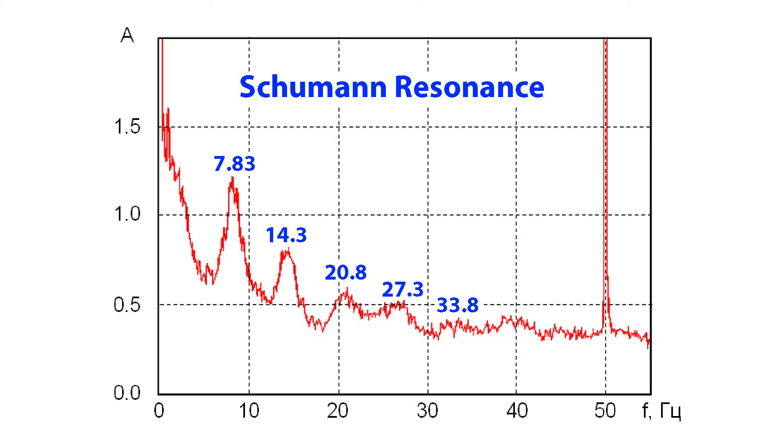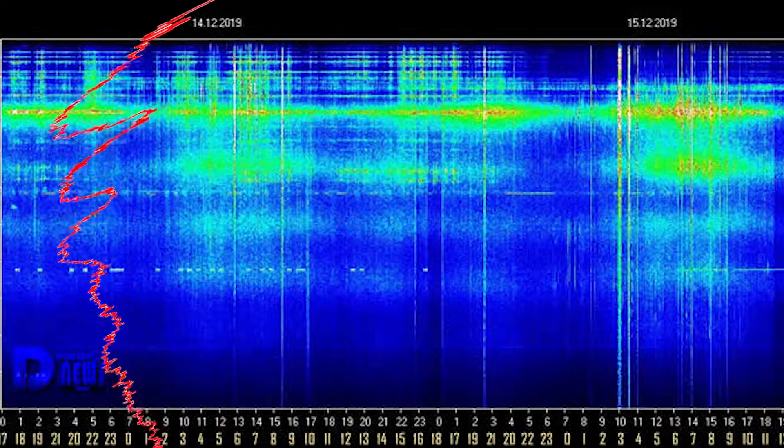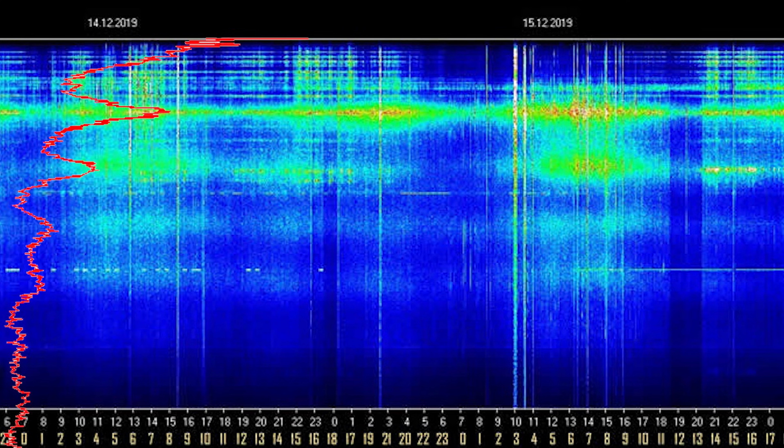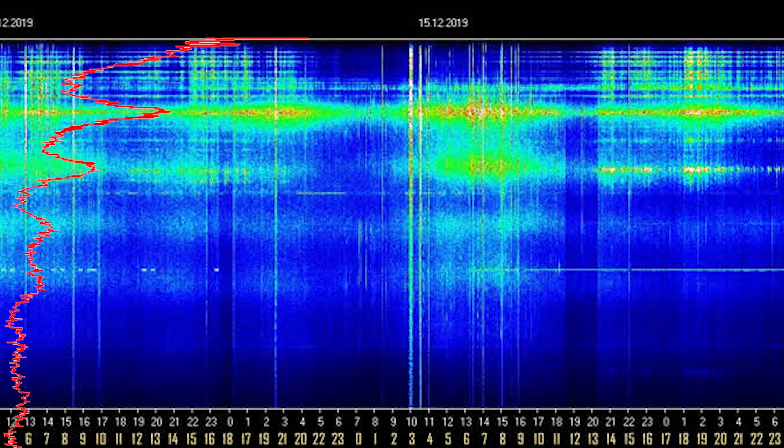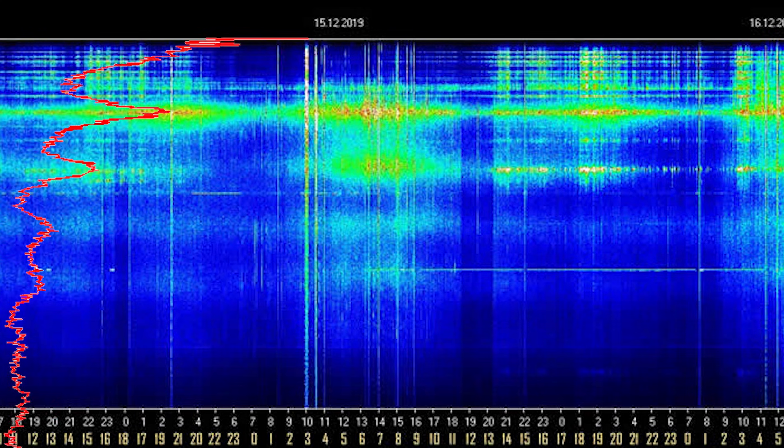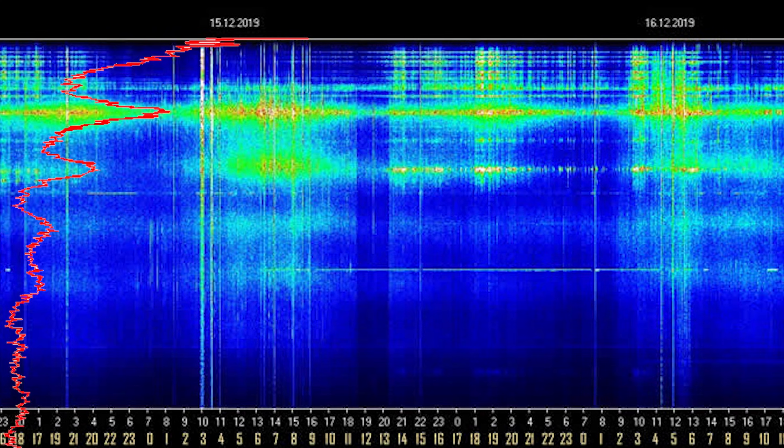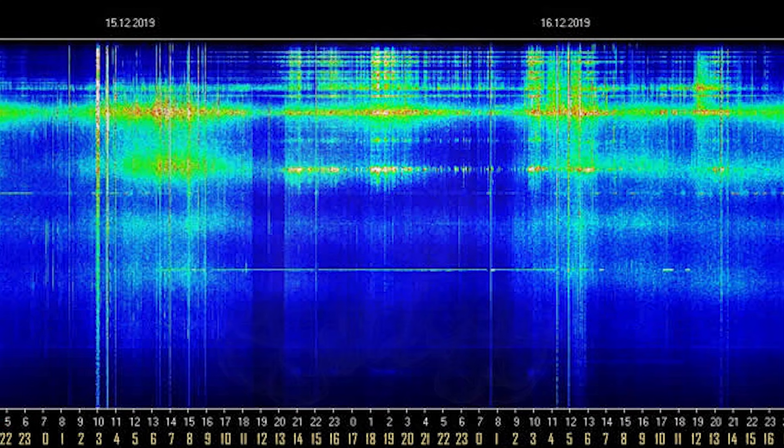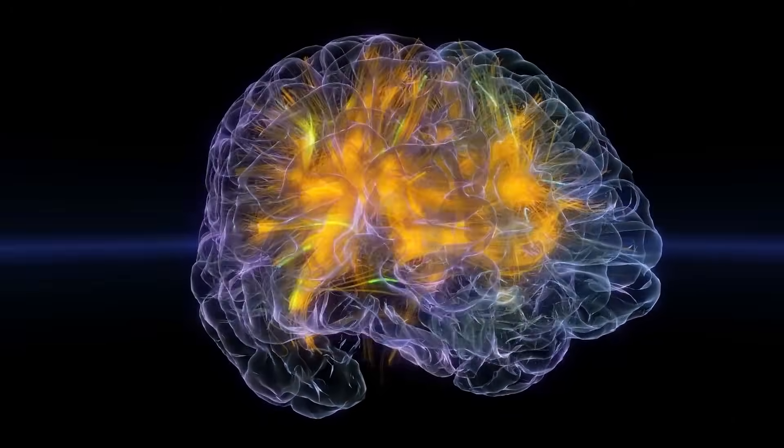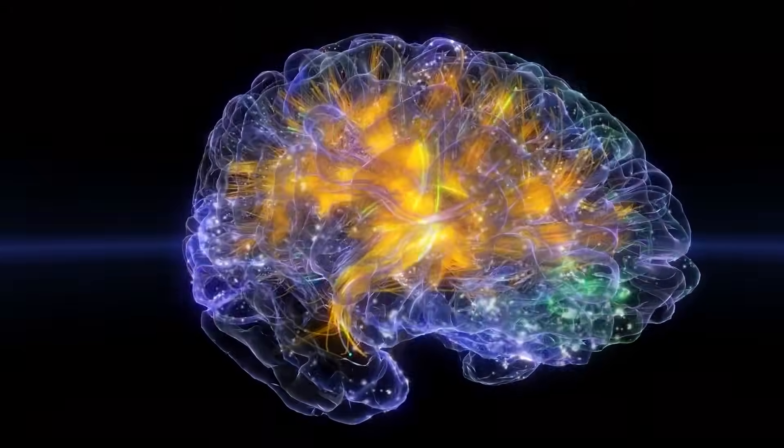The 7.83 hertz foundational Schumann resonance is the highest amplitude of the different modes. The Schumann resonance is electromagnetic radiation that has even lower frequency than radio waves. And like radio waves, Schumann resonance electromagnetic radiation is able to penetrate and travel through most materials, including your body.